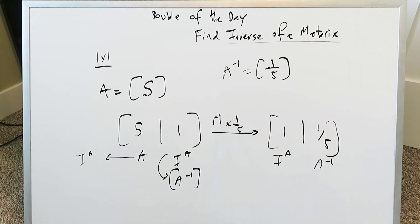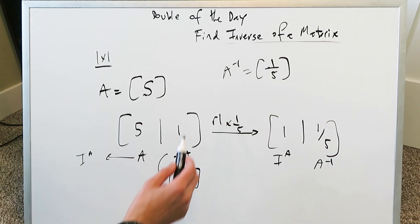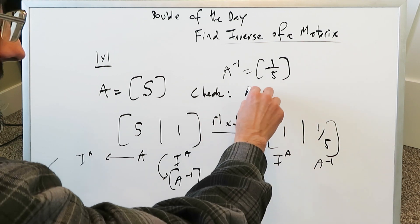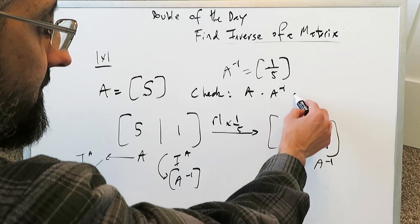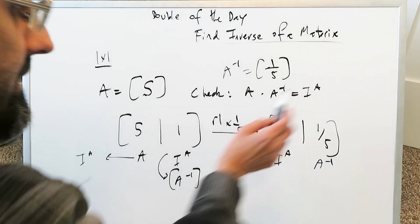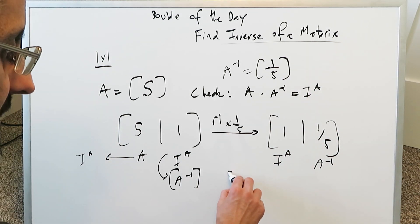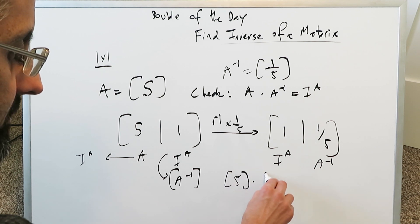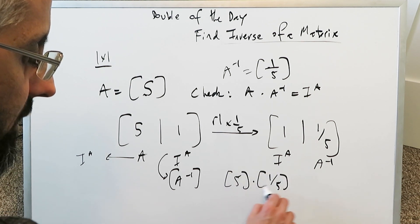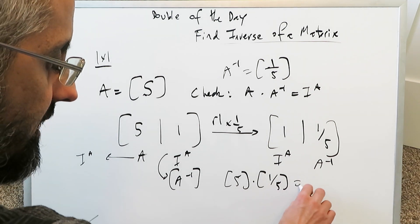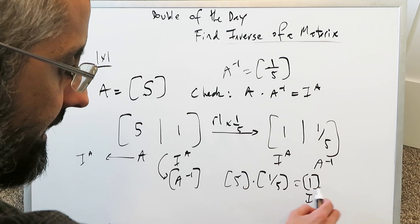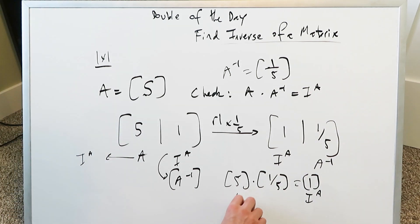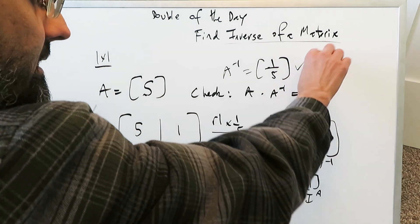To make sure your answer is right, there's a specific check you can do. You multiply your original with your inverse — the new inverse you've determined — and you should end up with the identity matrix. My original was just a five and I'm multiplying that by one over five. I have a one by one times one by one, giving a one by one answer. Five times one over five gives me the identity matrix, so I know my answer is right.